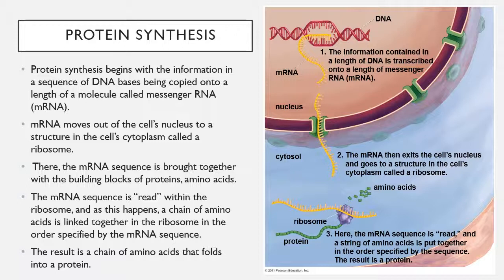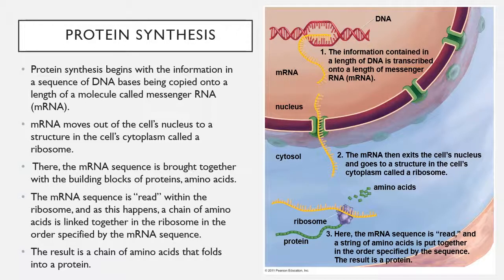Protein synthesis begins with the information in the sequence of DNA bases. Some segments of that DNA code — remember we have letters C, A, T, and G as our DNA bases — get copied onto a piece of messenger RNA. The messenger RNA builds a copy of that DNA code. Your DNA always stays inside the nucleus, but the copy of the DNA, called mRNA, gets made and that copy then leaves the cell. That copy called messenger RNA goes to a structure in the cell's cytoplasm called a ribosome.